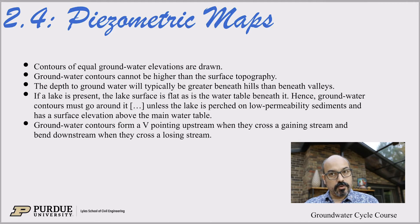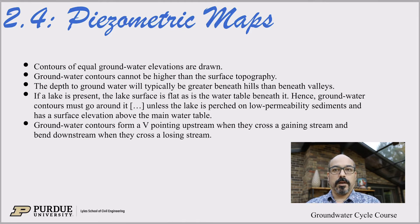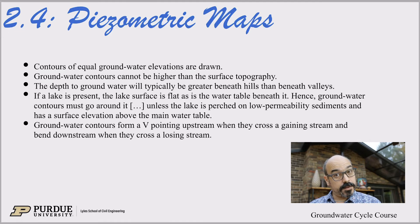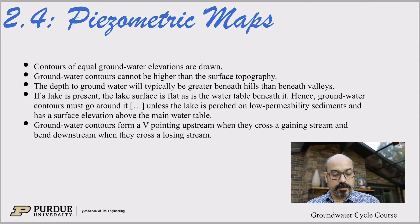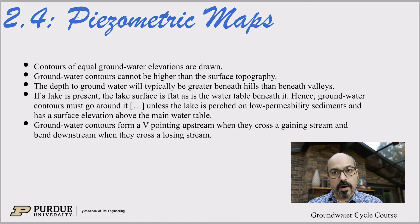What we want to do is draw contours of equal groundwater elevation. This is very similar to a topographic map, where you have contours of elevation — it's the same, but for the water. Groundwater contours cannot be higher than the surface topography. The depth to groundwater will typically be greater under hills than under valleys, so the groundwater roughly follows the contours of topography.